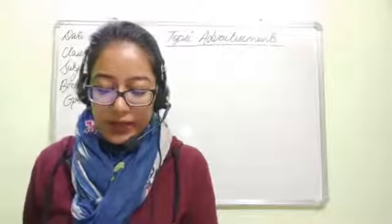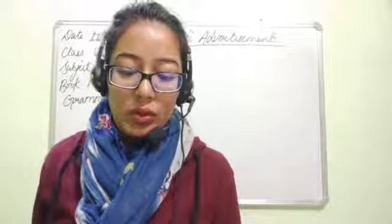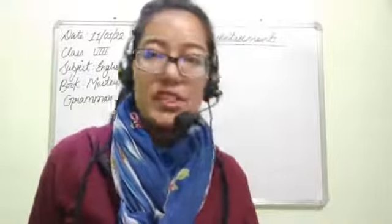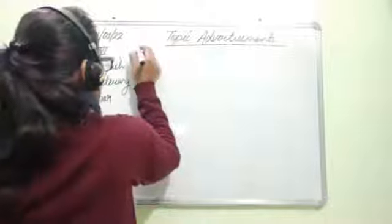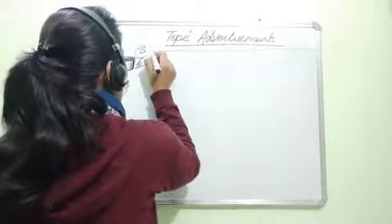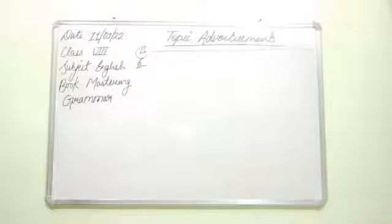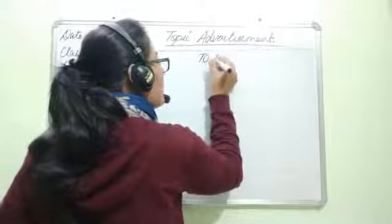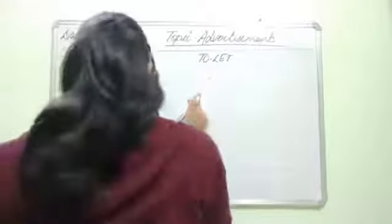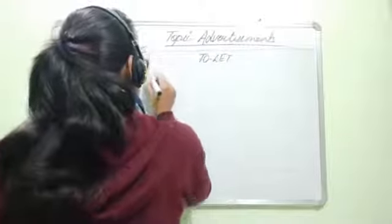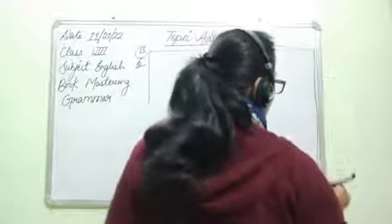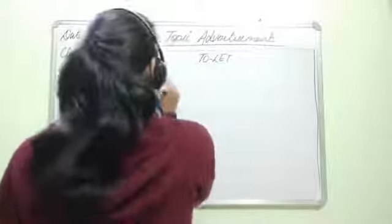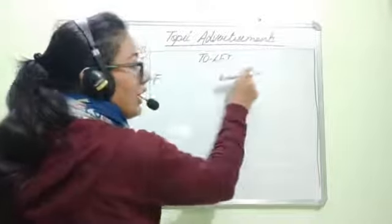Now, write a classified advertisement for the sixth one: to let an independent bungalow at Panaji, Goa. Give details of area, number of rooms, and facilities. So we have to once again write a classified advertisement. Make a box, and the heading 'To Let' would be in capital letters. Leave a line after the heading, then start with your main content.